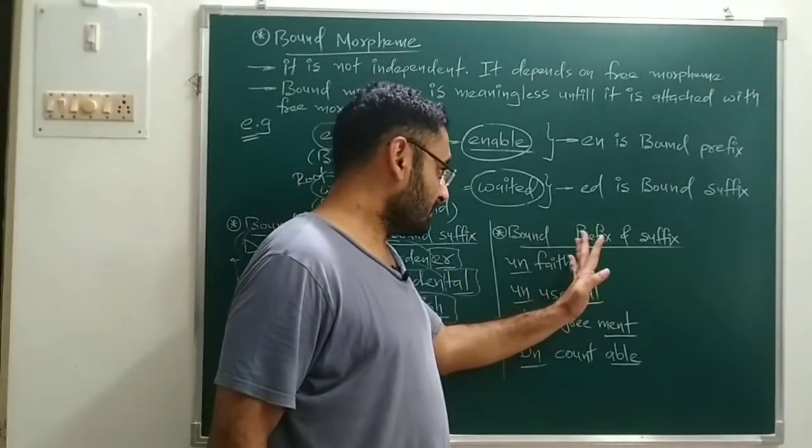To summarize: things that are meaningless until attached to a free morpheme are bound morphemes. Those attached before the free morpheme are bound prefixes; those attached after the root or free morpheme are bound suffixes. This completes the meaning of morphemes and the meaning of free and bound morphemes with examples.